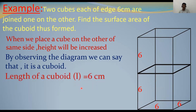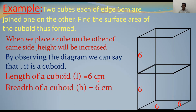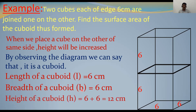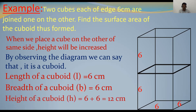Length of the cuboid: L = 6 cm. Breadth of the cuboid: B = 6 cm. Height of the cuboid: H = 6 + 6 = 12 cm. Height is increased, that is why it is 12 centimeters.